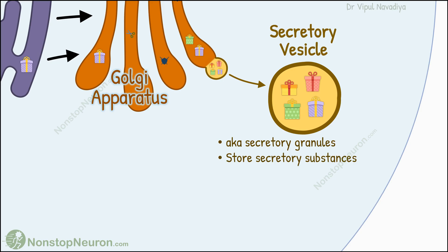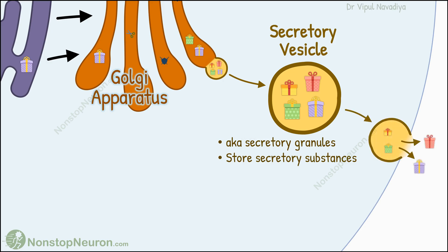For example, a function of pancreatic acinar cells is to release digestive enzymes. Once these enzymes are synthesized by the endoplasmic reticulum-Golgi apparatus system, they are packed in secretory vesicles and stored until needed. When the cell is stimulated for release, the secretory vesicles release them into the pancreatic duct. For this reason, they are seen abundantly in the cells involved in secreting proteins.